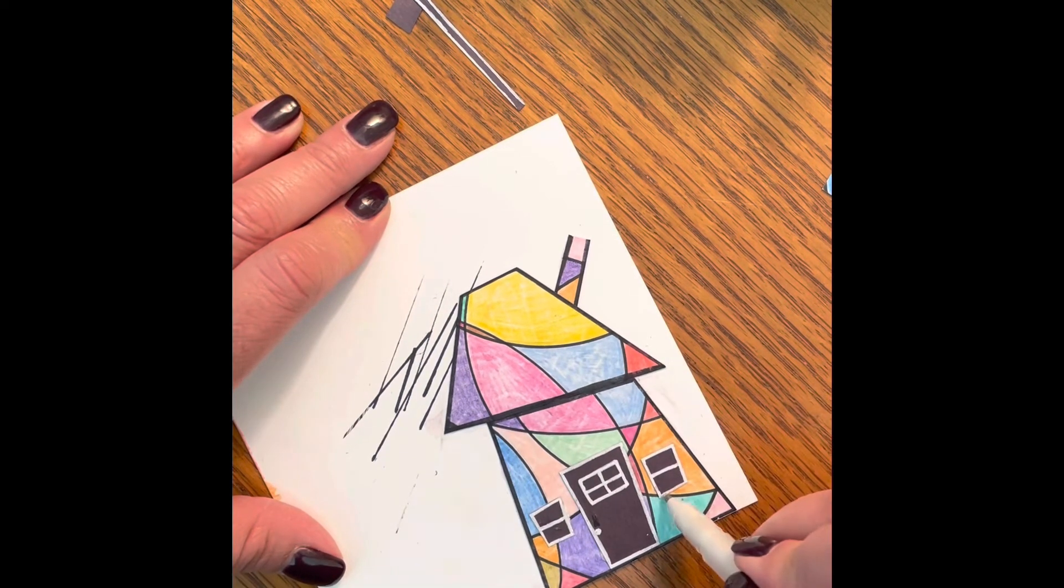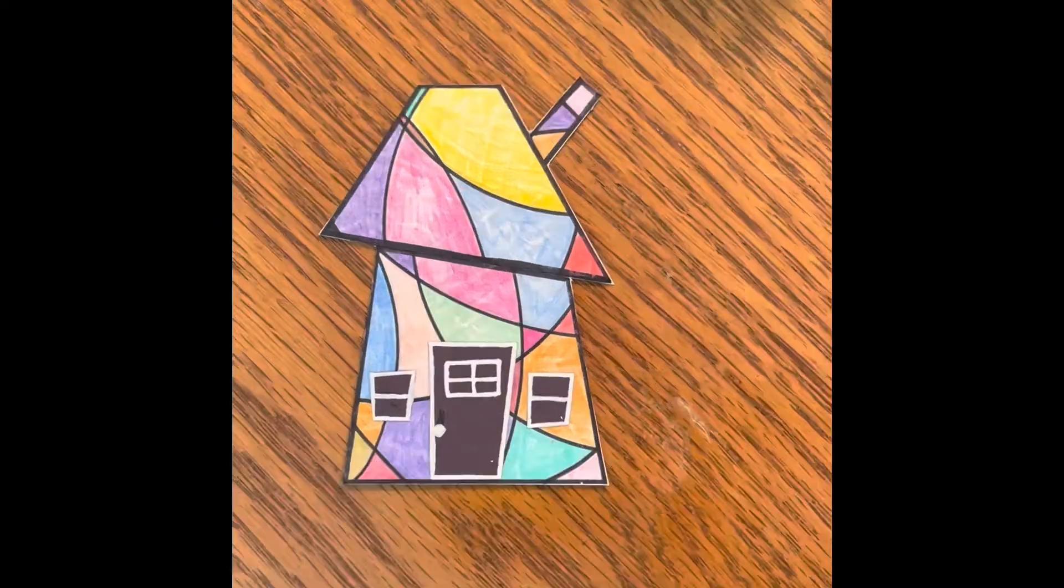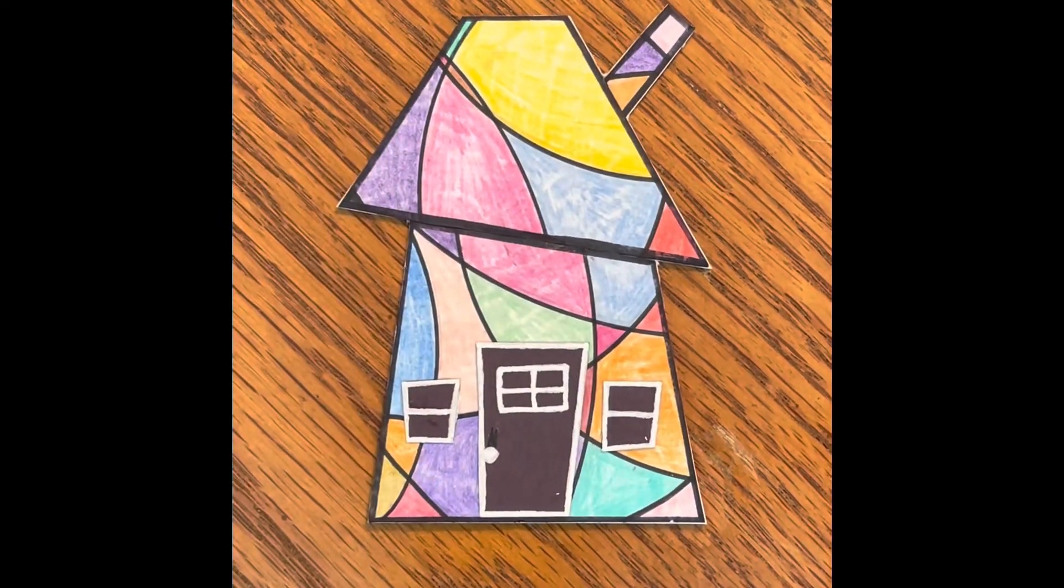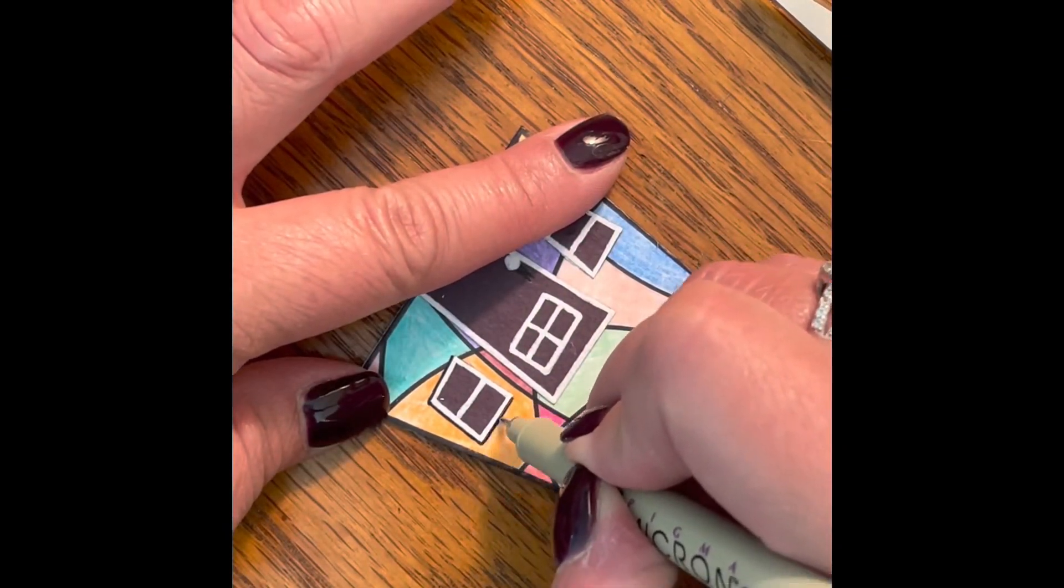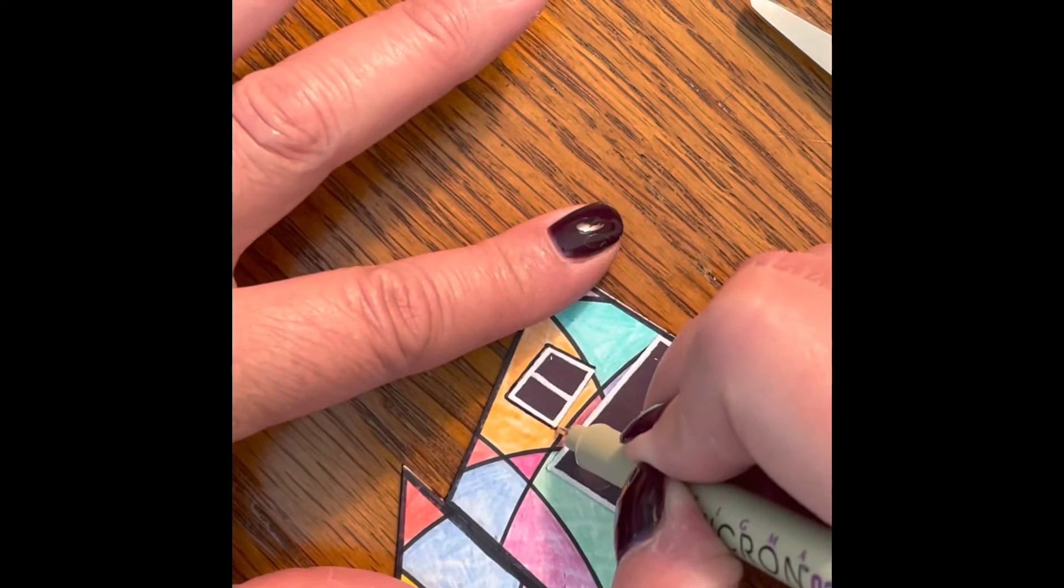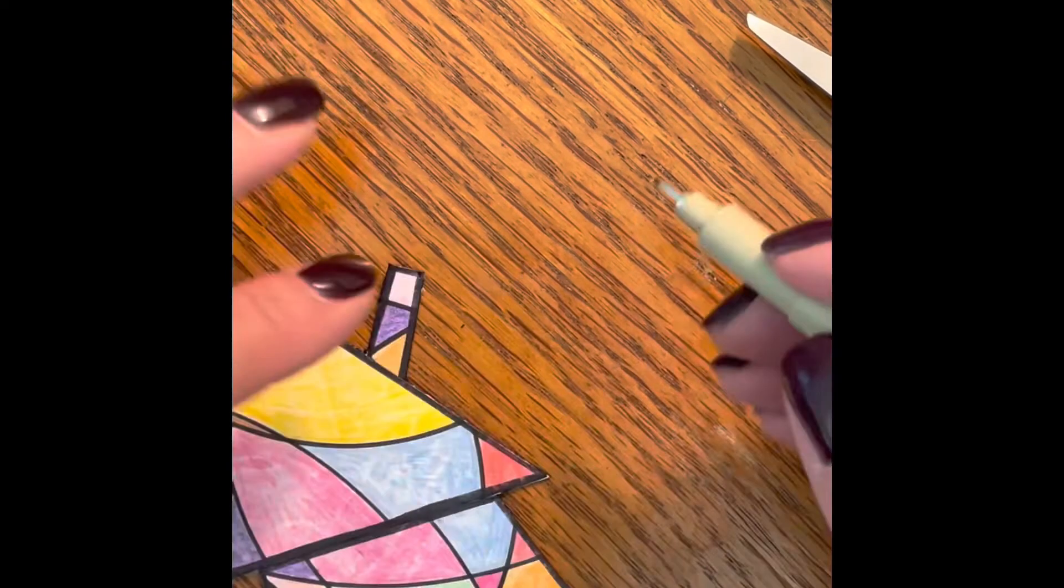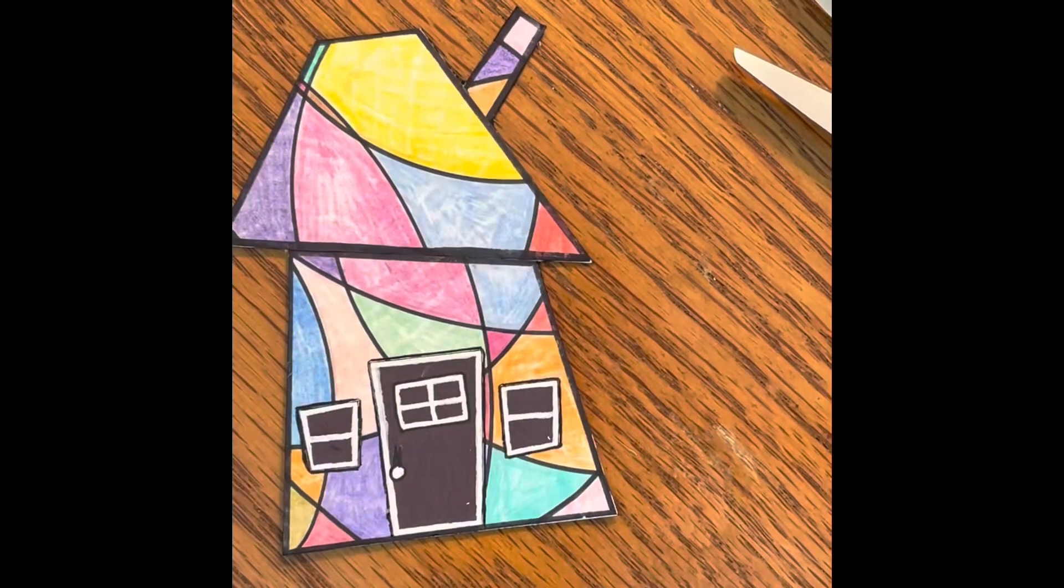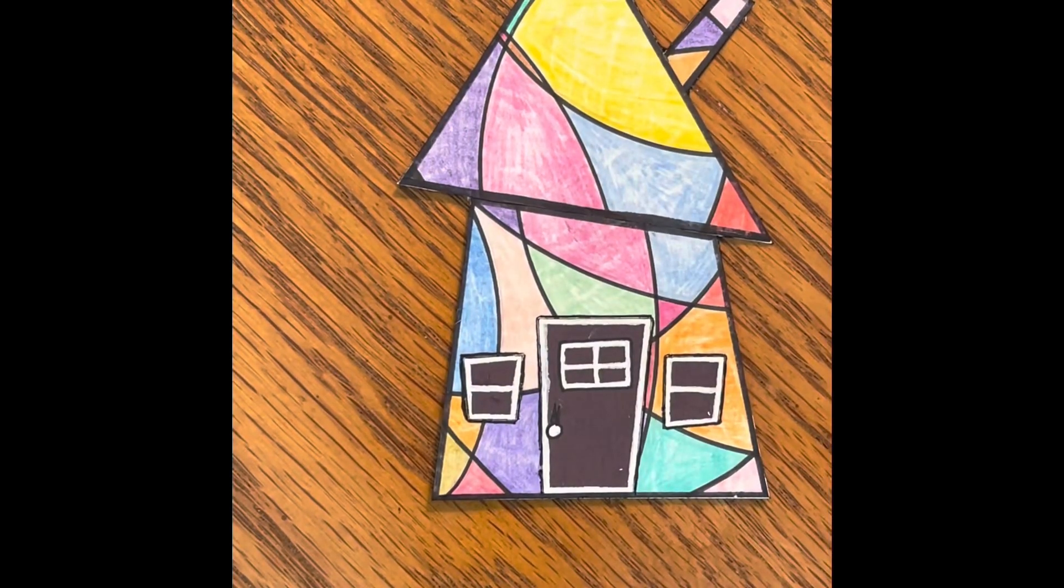Now, one thing I noticed is that the white lines sort of get lost in my card. So I'm going to take a thin black marker and I'm just going to trace around the door and the windows just to make them stand out with the contrast to the house. And I think it was the right thing to do. I love this card. I hope you enjoyed watching. I hope you'll try it out for yourself.